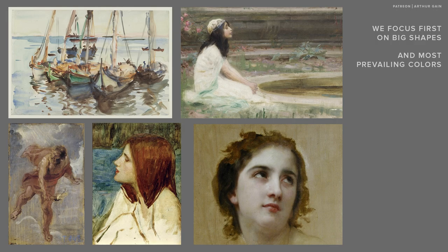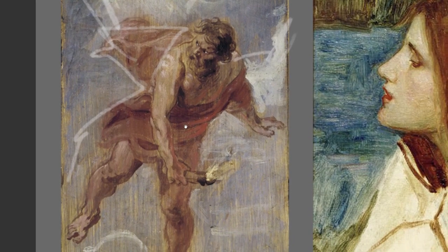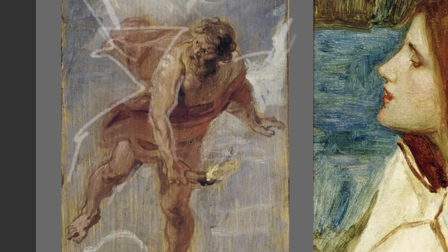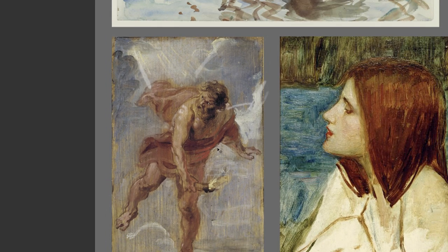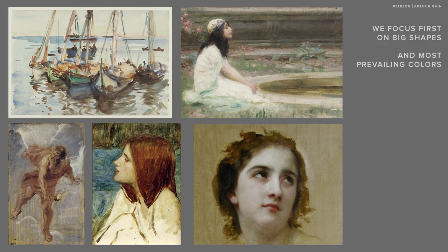Beginning with simplified shapes is always the best way, like in this Rubens sketch here. As you can see, he didn't even bother himself with the value structure — just a general separation of light and dark families, but no more. The focus here is just the design of these shapes with different colors, and we can immediately see the blue, red, and yellow color shapes. Very simplified and very general shapes of color help to establish the most important relationships between shapes in the painting.